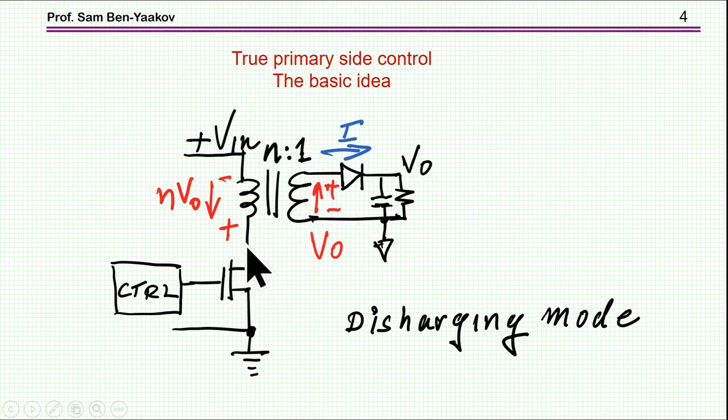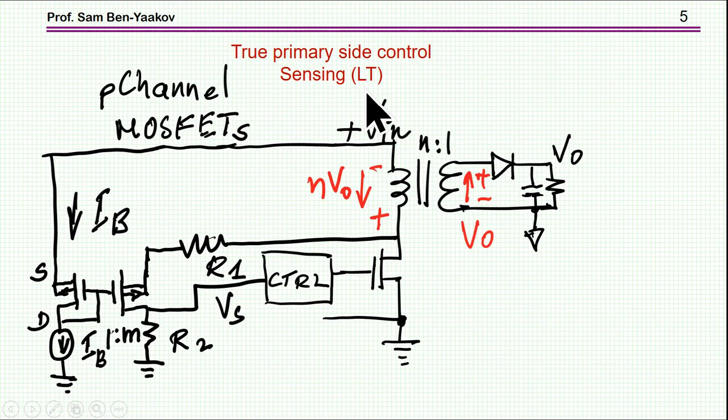So the problem is that we have now to measure this voltage, N times V out, which is sort of floating, it's not referred to ground, bring it to the ground level so that the controller can sense it, and then act on it. So this is the arrangement of the linear technology approach.